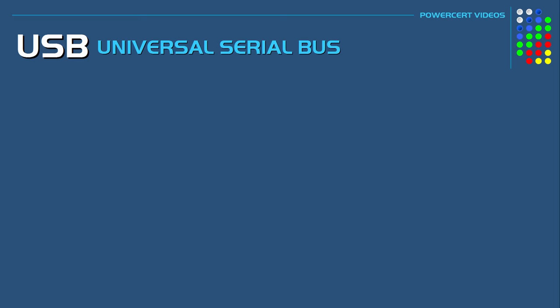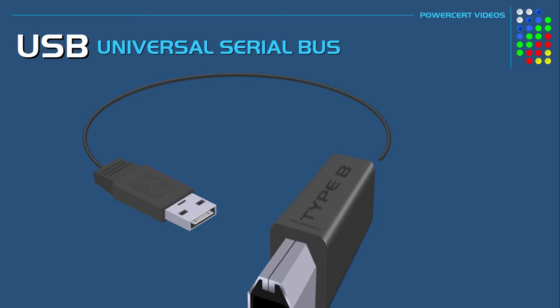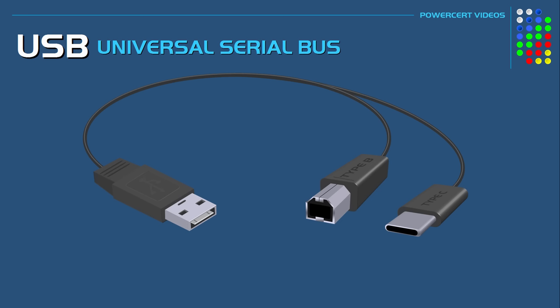In addition to the different speeds of USB, there are also different types of USB cables, connectors, and ports. USB cables will typically have two different connectors on each end. They will have either Type A, Type B, or Type C, with the Type A connector on one end and B or C type connectors on the other end.